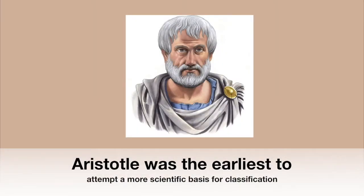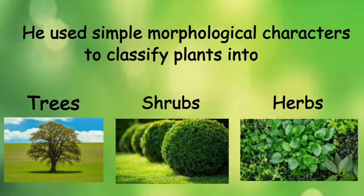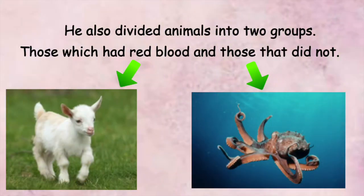Aristotle was the earliest to attempt a more scientific basis for classification. Aristotle used simple morphological characters to classify plants into trees, shrubs and herbs. He also divided animals into two groups: those which had red blood and those that did not.